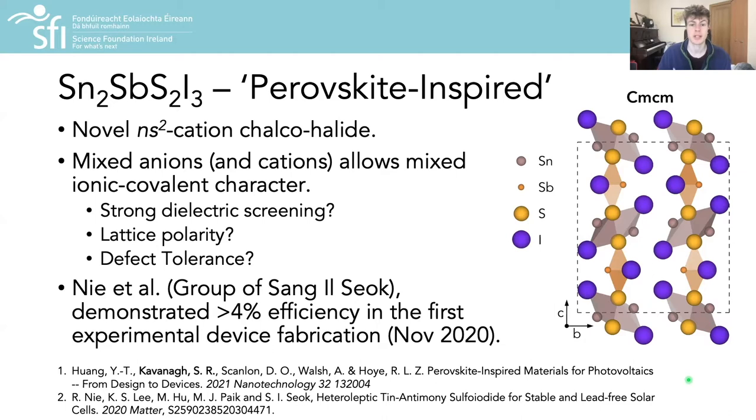Tin Antimony Sulfo Iodide is a mixed cation, mixed anion, quaternary metal chalco-halide which has recently attracted attention as a perovskite-inspired material. These are materials which possess similar properties as the lead halide perovskites, such as the combination of a partially oxidized NS² cation with halide anions, with the aim of replicating the high performance of lead-based perovskites while avoiding the presence of lead and achieving a commercially viable level of stability. Chalcogen halides are ideal for this goal as metal chalcogen bonds are much stronger than metal halide bonds, affording greater thermodynamic stability in this material class.